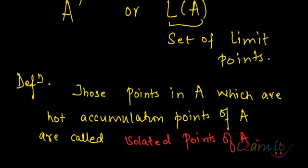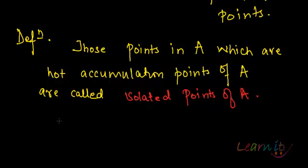To be more precise, c would be an isolated point if there exists a delta neighborhood of c which does not contain any other point of A apart from c.